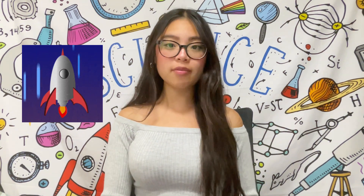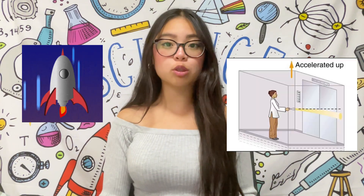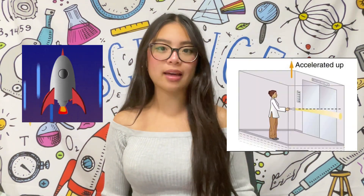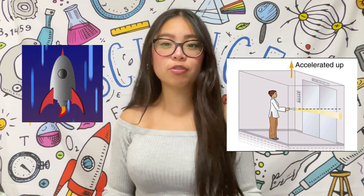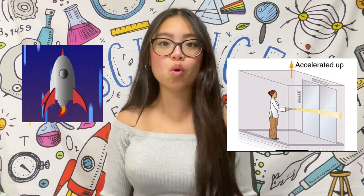The light would travel in a straight path. But we know that the rocket is accelerating upward and the floor is going to start approaching the light beam. Even though the light beam is traveling in a straight path, the floor of the rocket would begin to accelerate upwards towards the light beam as time passed, causing the light beam to appear as if it's taking a curved path. But it is not actually the light beam that is curved — it is the floor coming upwards towards the light beam.